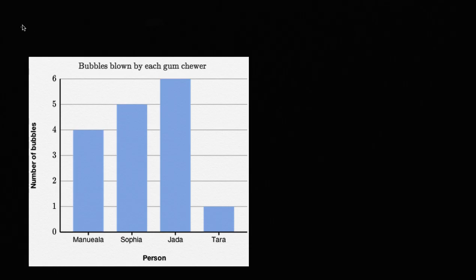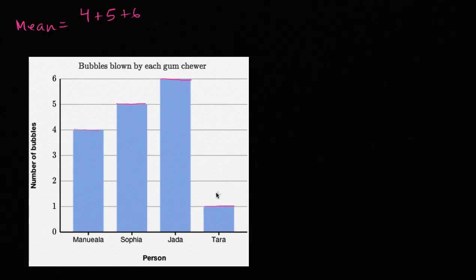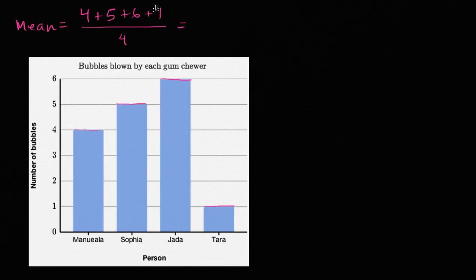All right, step one: let's figure out the mean. The mean is just the sum of the number of bubbles blown divided by the number of data points. Manuela blew four bubbles, Sophia blew five bubbles, Jada blew six bubbles, and Tara blew one bubble. We have four data points, so we divide by four. Four plus five is nine, plus six is 15, plus one is 16. So it's 16 over four, which equals four. The mean number of bubbles blown is four.